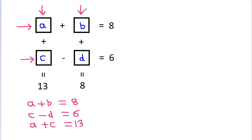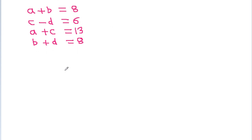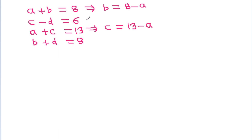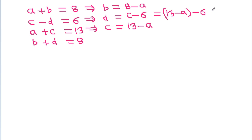And from this equation, we have B plus D is equal to 8. Now, if we try to convert every number in terms of A, then from here we can get B is equal to 8 minus A. And from here, we can get C is equal to 13 minus A. And from here, we can get D is equal to C minus 6, which is equal to 13 minus A minus 6, and 13 minus 6 is 7, so D is 7 minus A.